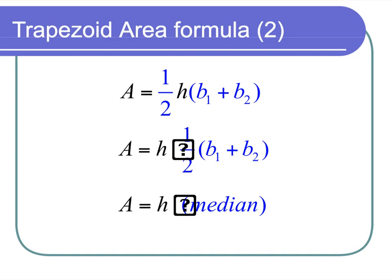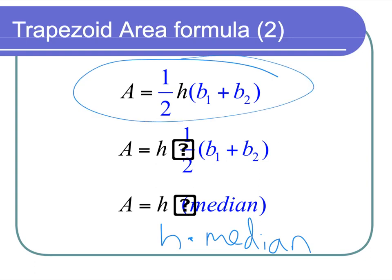So there are a couple formulas for the area of a trapezoid. You can do height times the median, H times median. Or the original: one-half times height times (base 1 plus base 2), or (base 1 plus base 2) over 2 times height. If I give you a problem where the height and the median are given, find the area — you'd need that formula. Or I could say the median and the area are given, find the height. This one is the most commonly used, because when you're measuring something you'll have those dimensions.